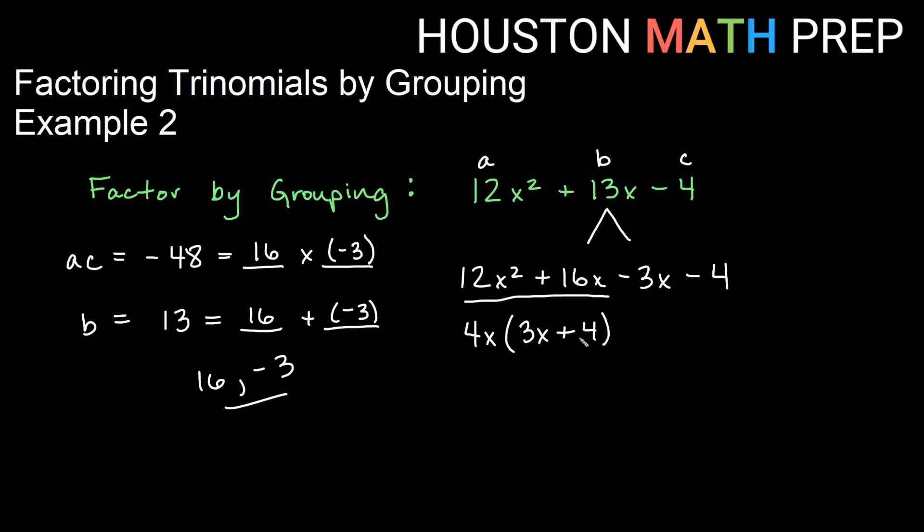I should be able to find the 3x plus 4 in the second half so I copy that down again and I say what times the 3x plus 4 will give me the other half. And if you notice we have negative signs here so everything is opposite sign of what we have here. I really need a negative 1 in front of that to make sure I get a negative 3x when I distribute and a negative 4.